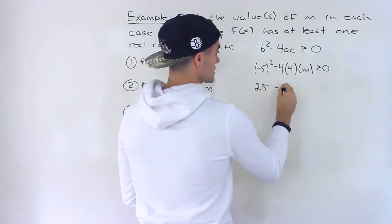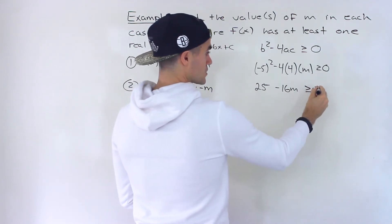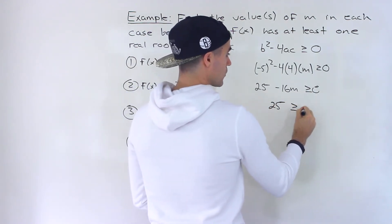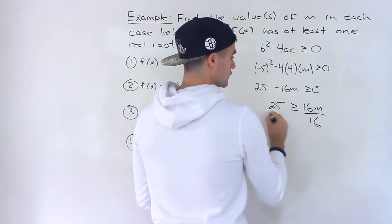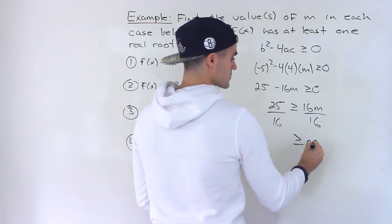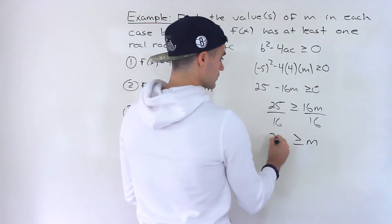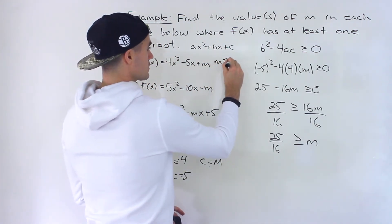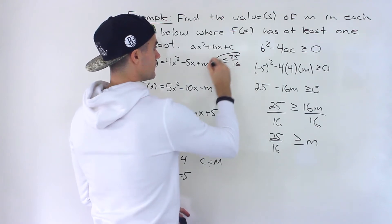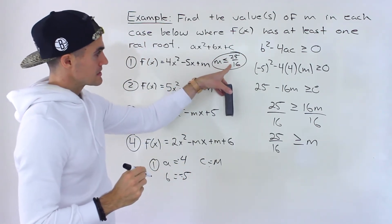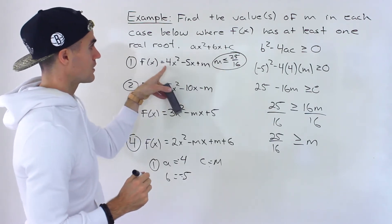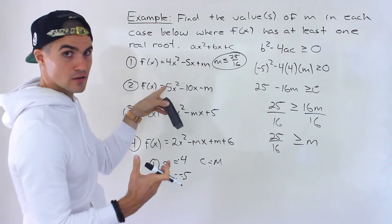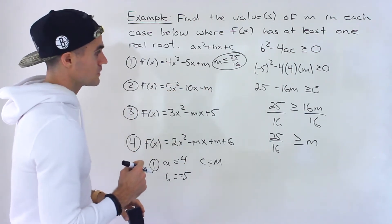So this would end up being 25 minus 16m greater than or equal to zero, and then we just isolate for m. When we divide by negative 16 we'd have to flip the sign, so instead I'll bring the negative 16m over, making it positive 16, and then we don't have to worry about flipping the sign. So m would be less than or equal to 25 over 16. So for number one, as long as m is less than or equal to 25 over 16, this function will have at least one real root. If m equals 25 over 16, it has one root; if m is less than that, it has two roots.